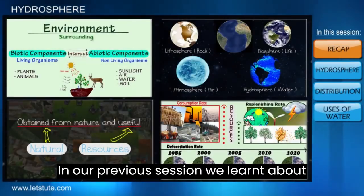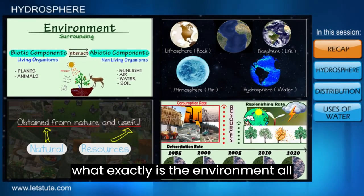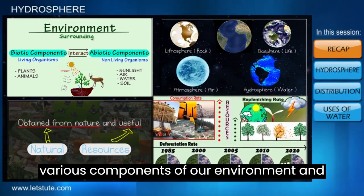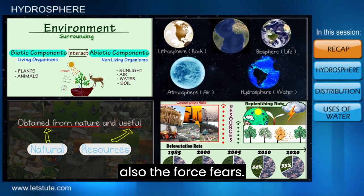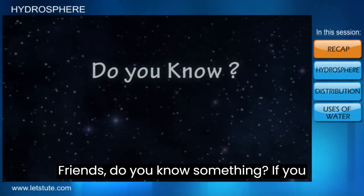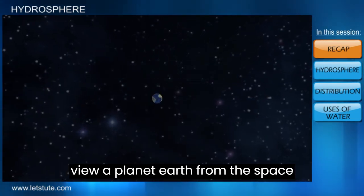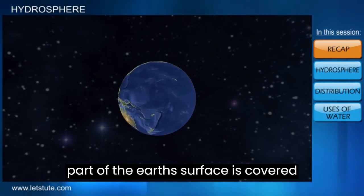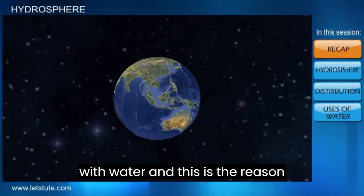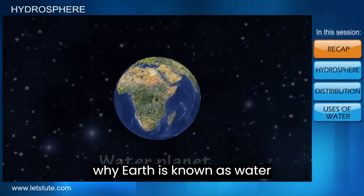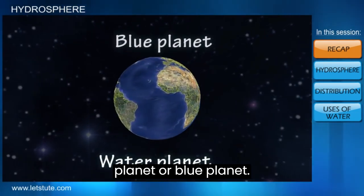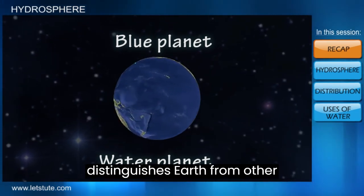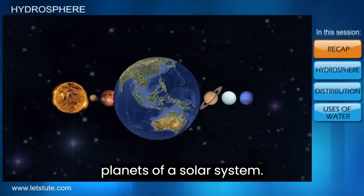In our previous session, we learned about what exactly our environment is all about, where we studied the various components of our environment and also the four spheres. If you view planet Earth from space, it looks blue, as a major part of the Earth's surface is covered with water. This is why Earth is known as the Water Planet or Blue Planet, and this abundance of water distinguishes Earth from other planets of our solar system.